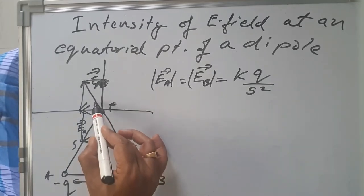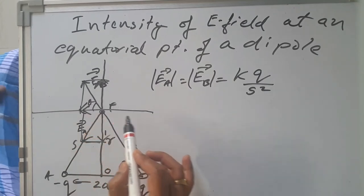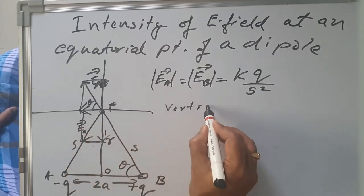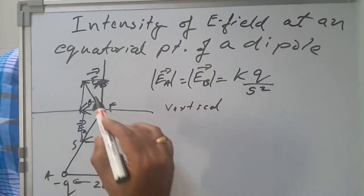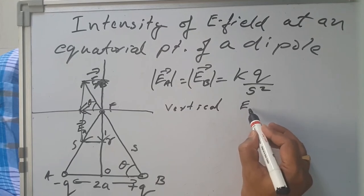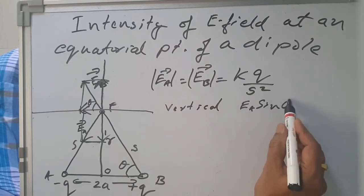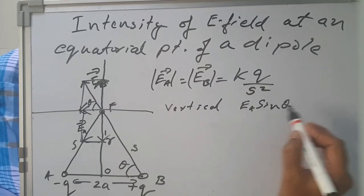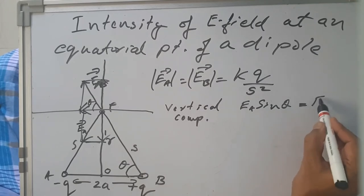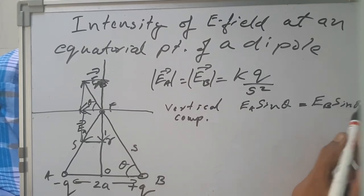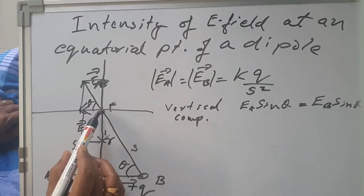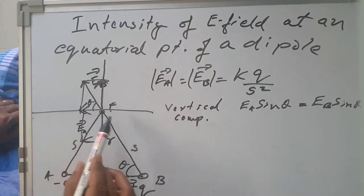If this angle is theta, this angle is also theta. The vertical component of EA is EA sin theta, which is equal to EB sin theta. They are equal in magnitude and opposite in direction, so they cancel each other. But the horizontal components of both EA and EB are in the same direction — they will add up.